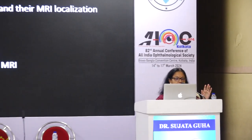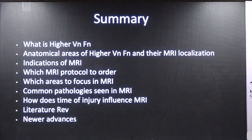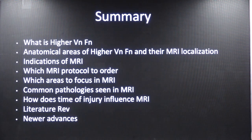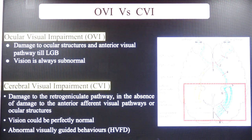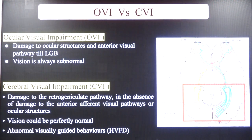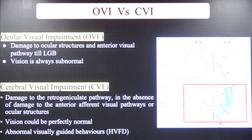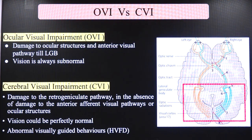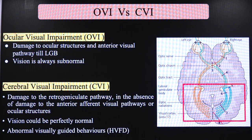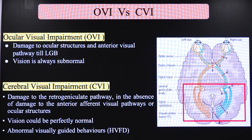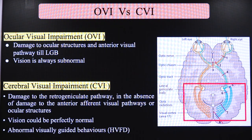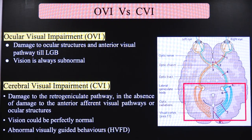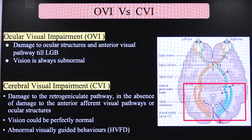OVI is ocular visual impairment where there is damage to structures from the eye to the visual pathway up to the LGB. In OVI, visual acuity, contrast, and colour are typically affected. CVI or cerebral visual impairment results from damage to the retrogeniculate pathway — here visual acuity could be perfectly normal but the patient may have abnormal visually guided behaviours or higher visual function deficits. We have two cerebral networks for higher visual processing: the dorsal occipitoparietal network dealing with spatial processing, and the ventral occipitotemporal network dealing with object, shape, and size processing.